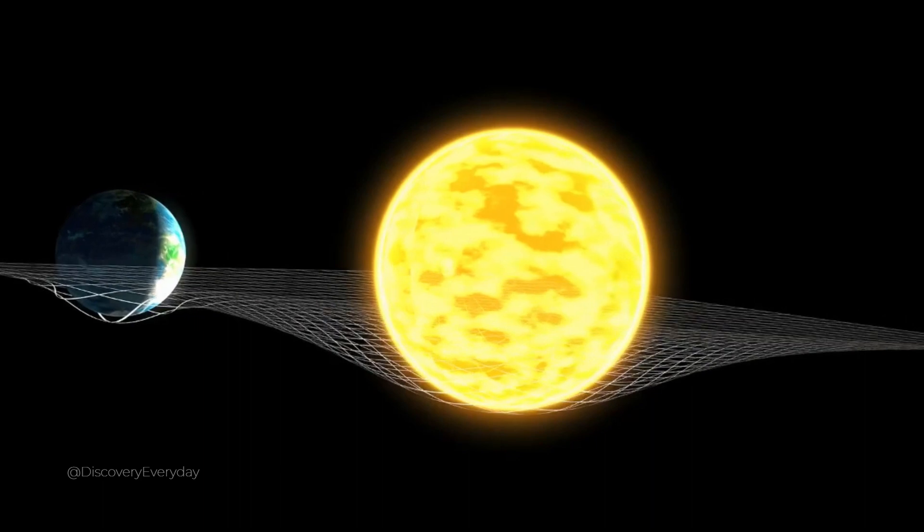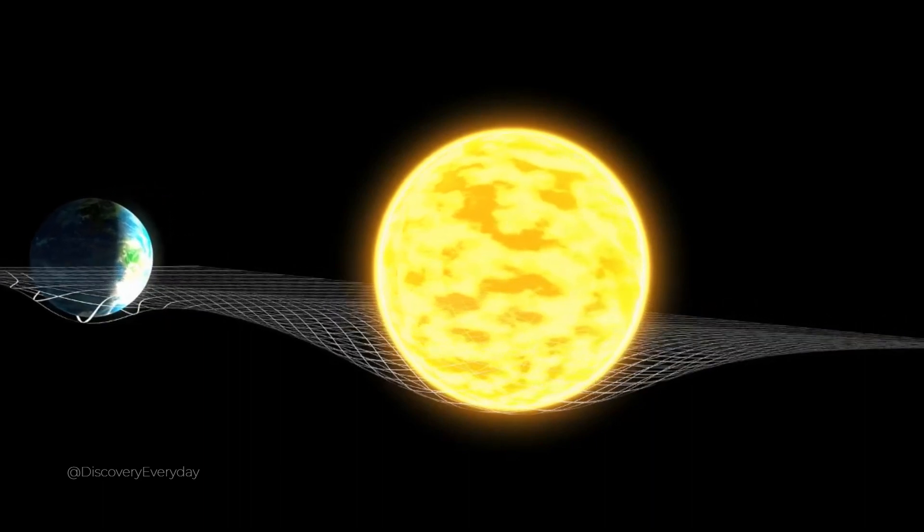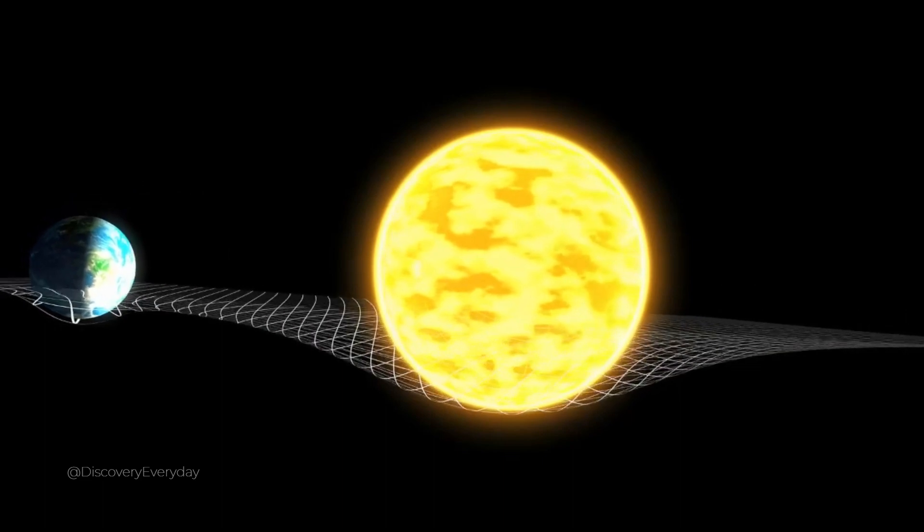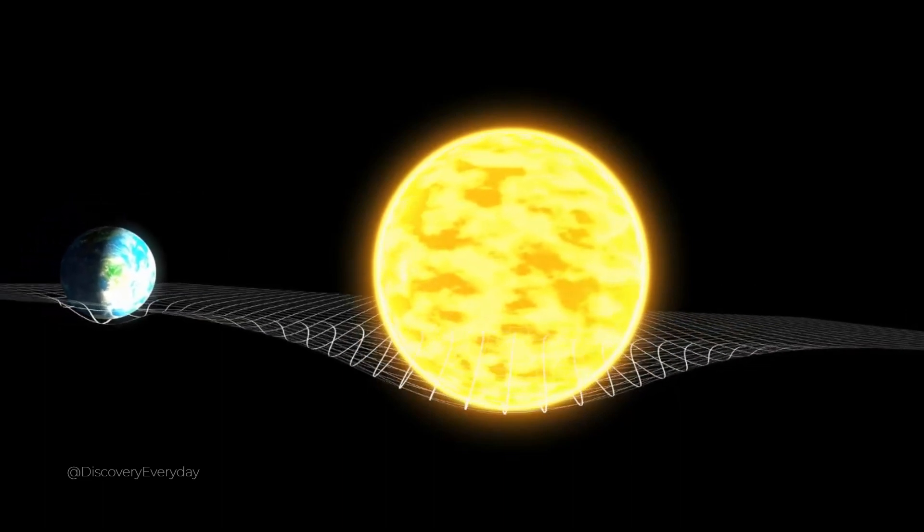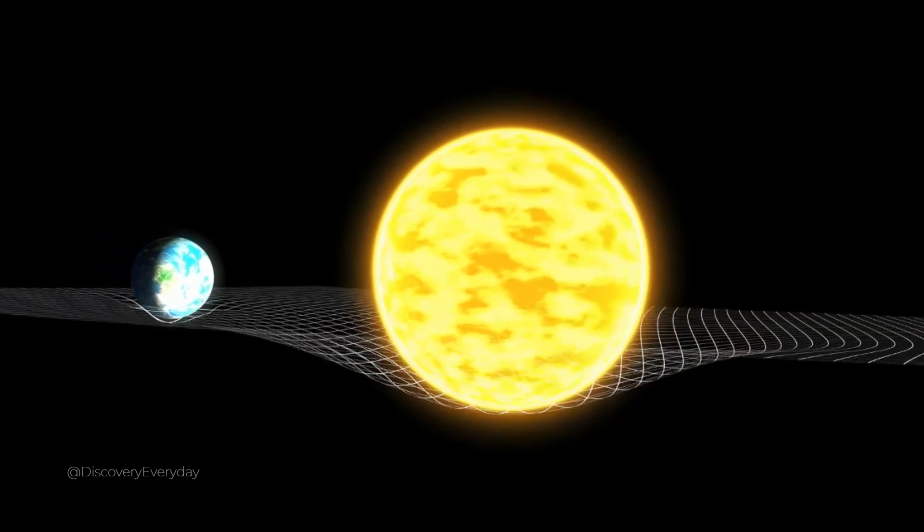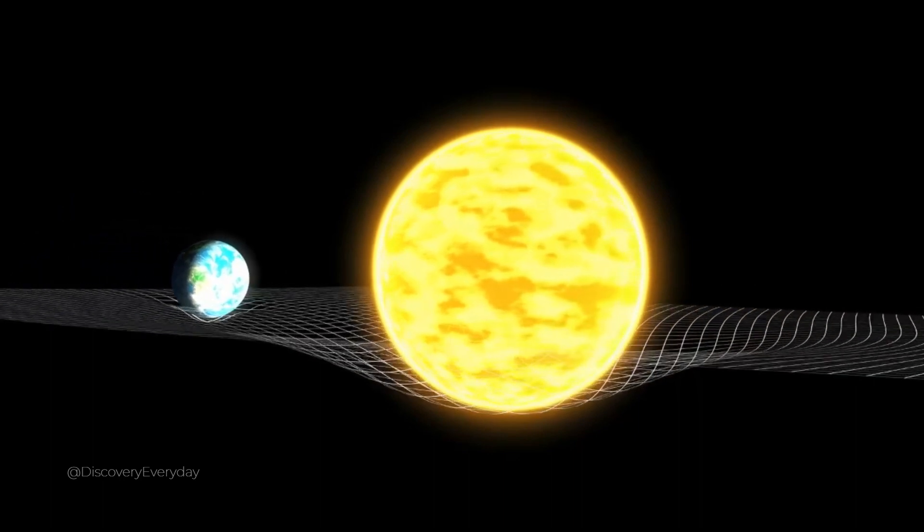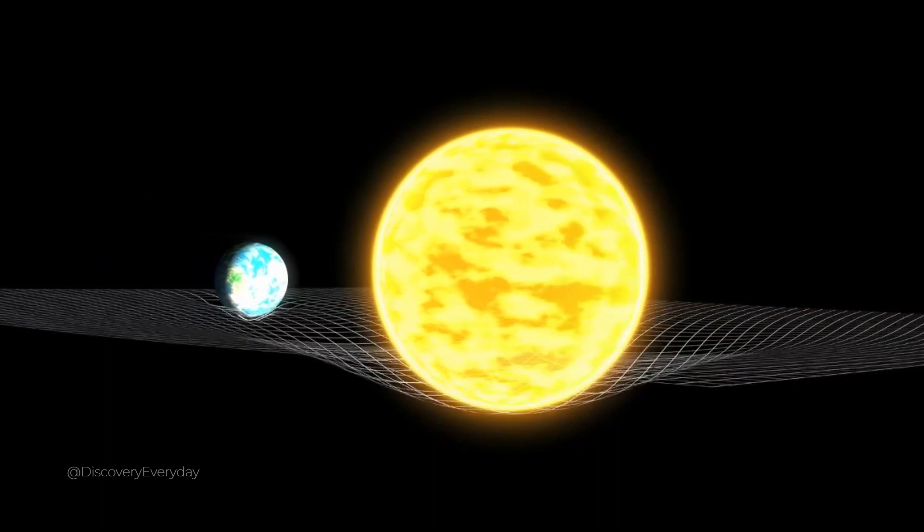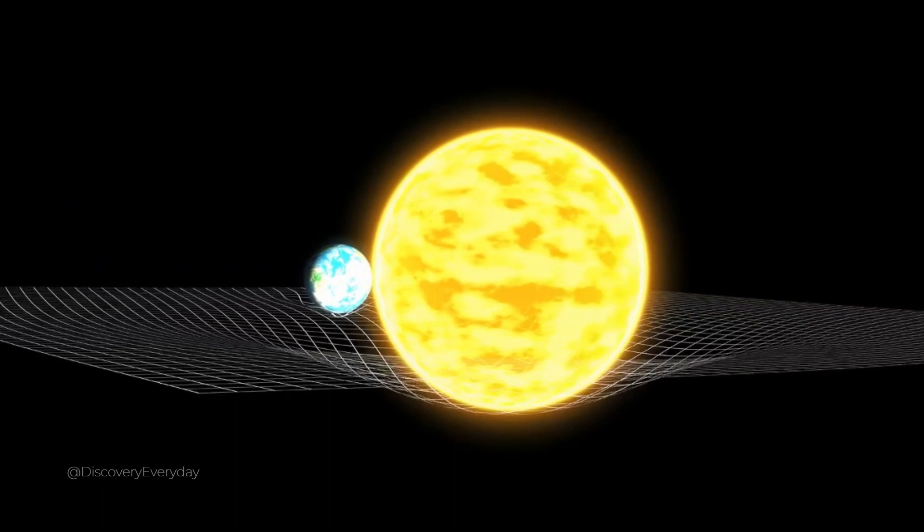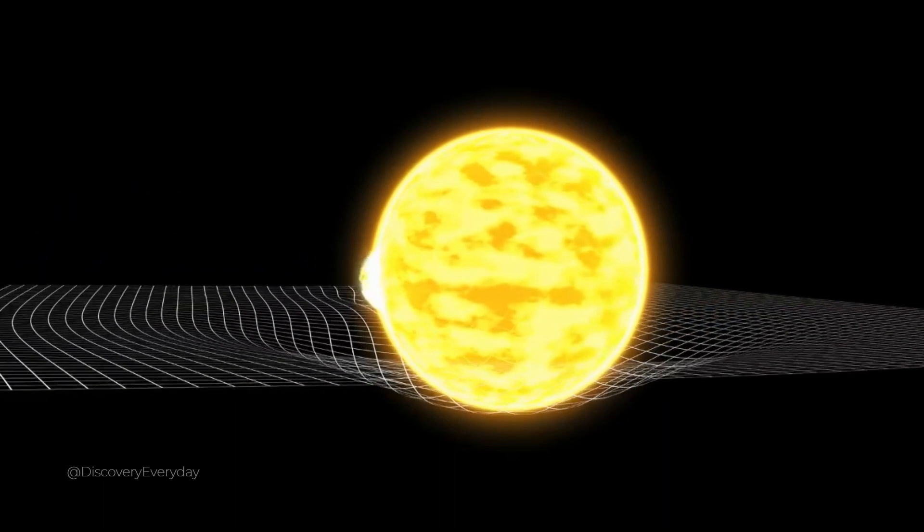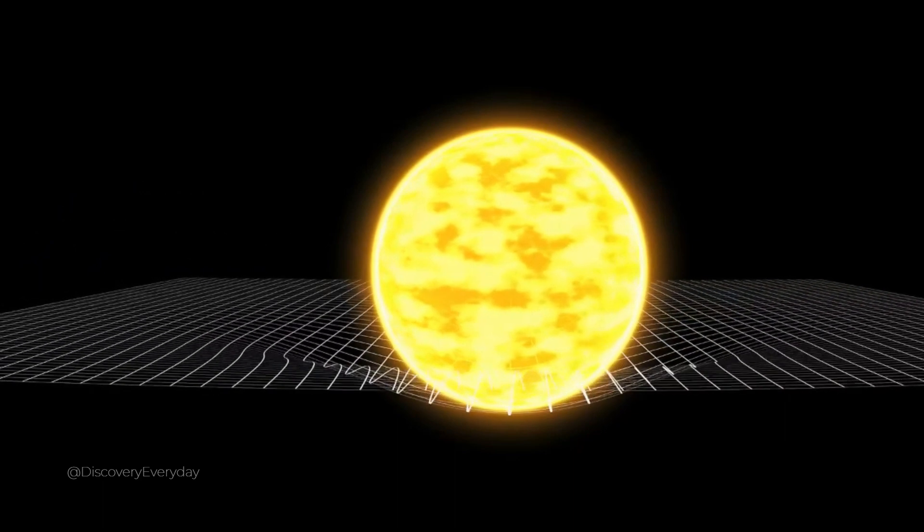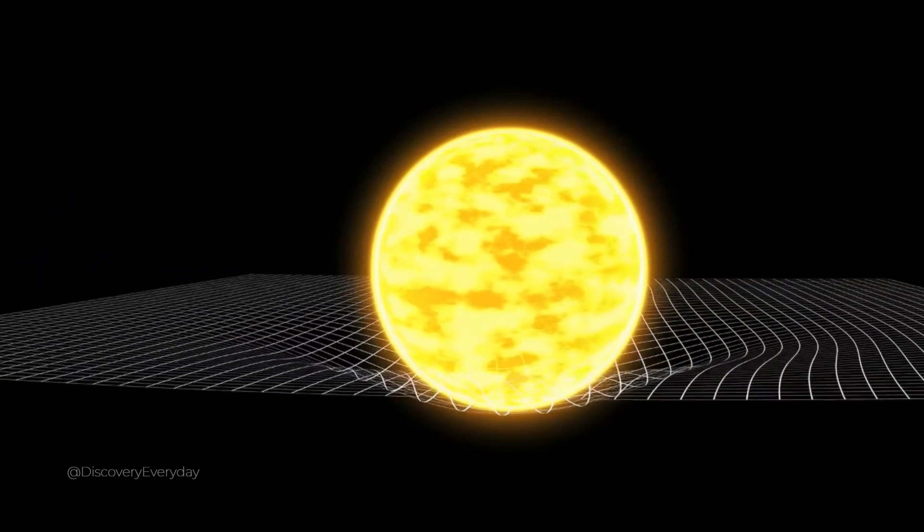Could the universe have been different? Our material universe consists of elementary particles, governed by the four forces of nature. Physicists can measure particle properties like the mass ratio between protons and electrons, they can study the strength and behavior of gravity, electromagnetism and the two nuclear forces, and they can determine a host of physical constants, like the speed of light. But no one knows why all those values are what they are. So why is the universe the way it is, and could it have been different?